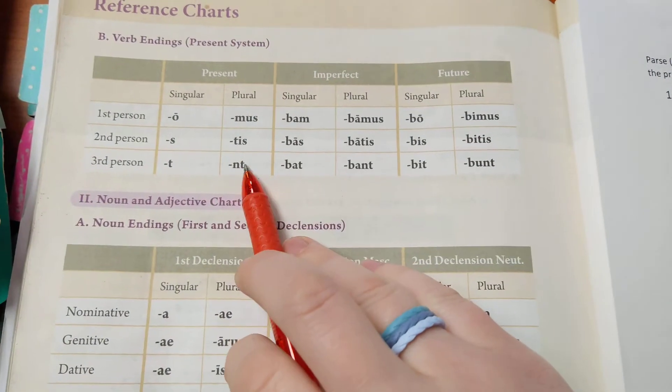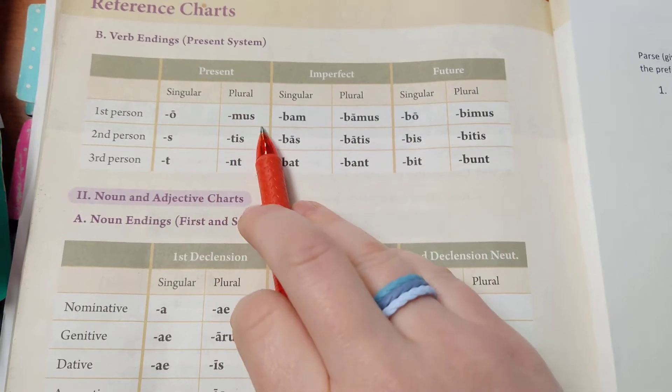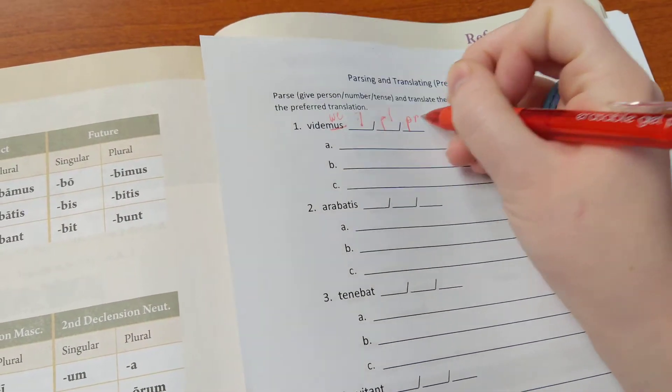And then which chart is it in? What tense is it? Is it present or imperfect? It's in the present tense chart, so we say PR for present.